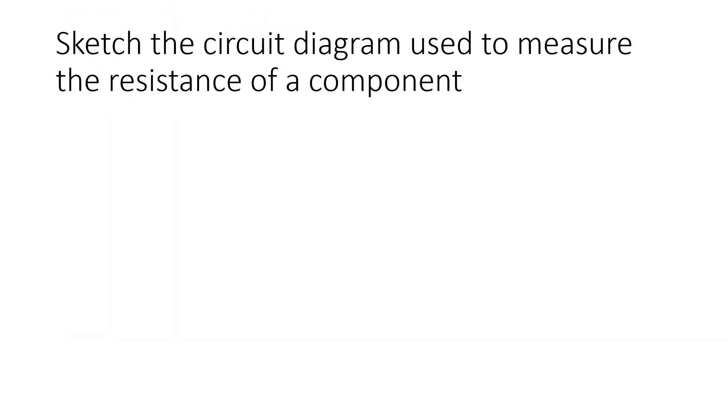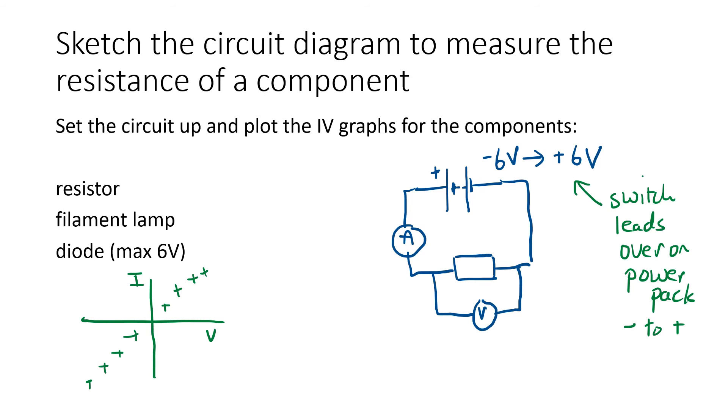The circuit diagram should have a power supply as shown. It should have the component, which could be a resistor but could be one of the other components, with an ammeter in series to measure the current, and a voltmeter connected in parallel to measure the potential difference across the component. To switch from positive to negative values, we simply switch the leads over on the power pack which reverses the polarity and sends current around the other way through the component. We can then record results and plot an IV graph for both positive and negative values of potential difference.